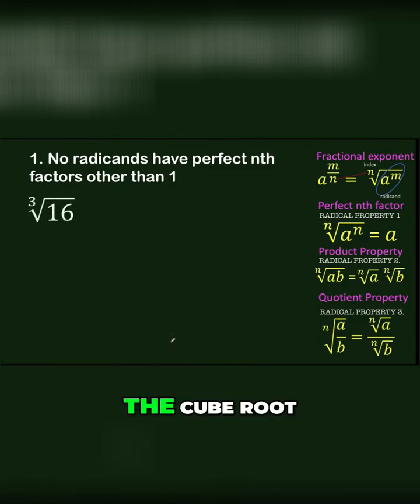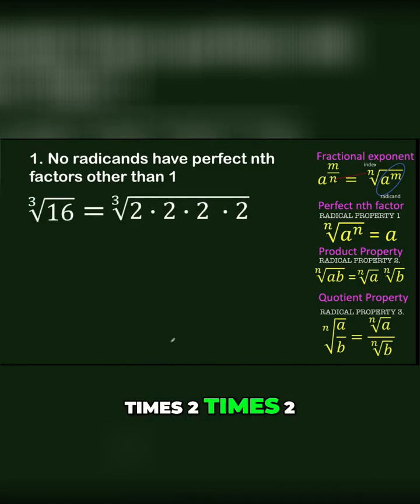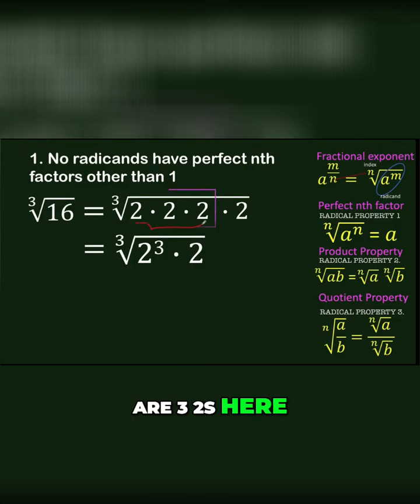Another example: the cube root of 16. We can write 16 as 2×2×2×2. Since the index is 3 and there are three 2s, this can be written as 2³ times the remaining factor.